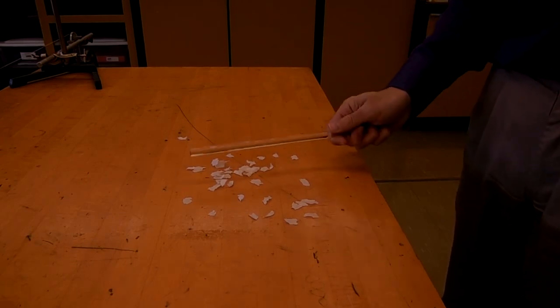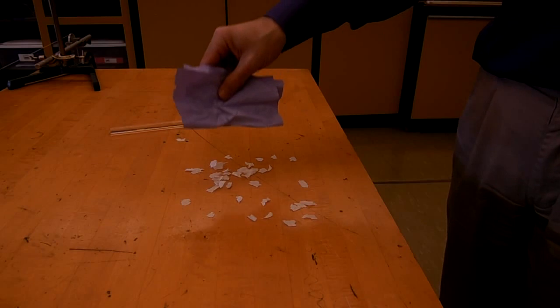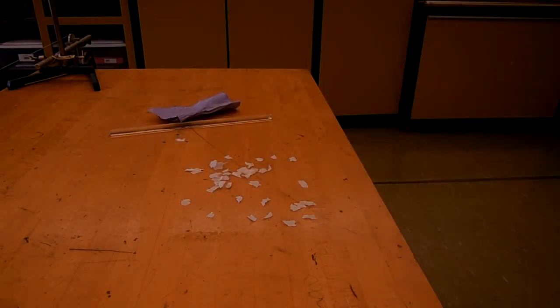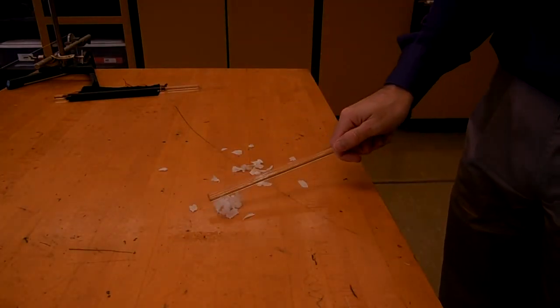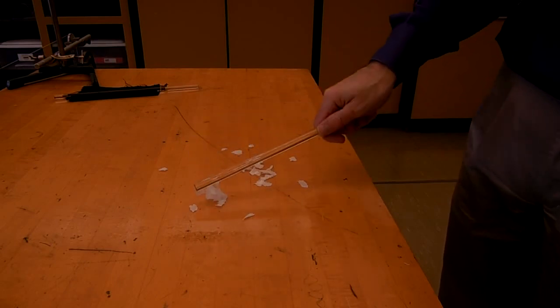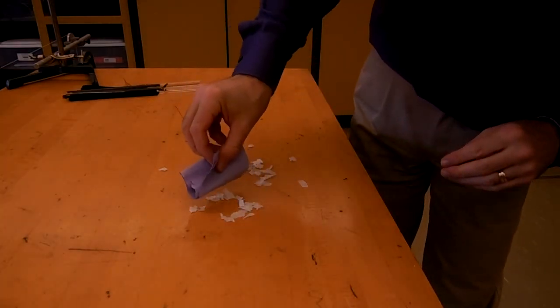The same is true of this glass rod, which I can rub with a piece of vinyl. At first, they don't pick up the pieces of paper. We say that they're uncharged, or we'll call it neutral. But again, after rubbing the vinyl on the glass, both the glass and the vinyl will move around and pick up small pieces of paper.